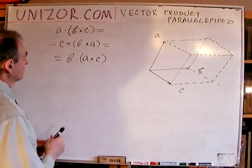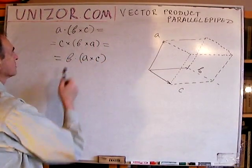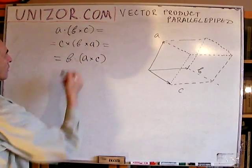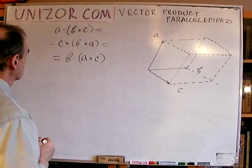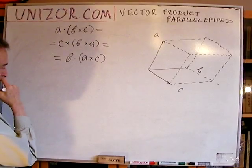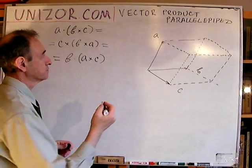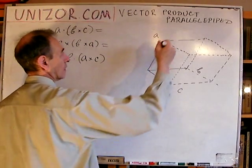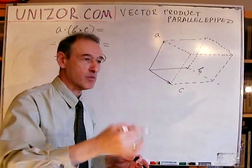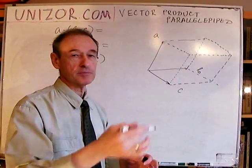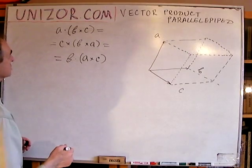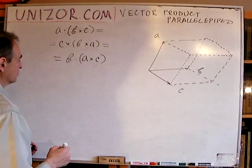Let me start with the first equality. Now, let's say A has coordinates A1, A2, A3; B has coordinates B1, B2, B3; and C has coordinates C1, C2, C3.